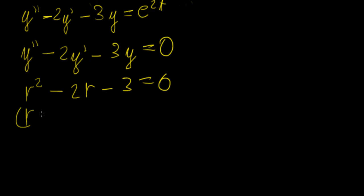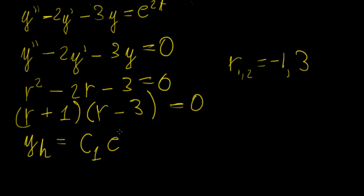We can factorize this, so that's going to be r plus 1 times r minus 3, such that r12 is going to be minus 1 or 3. So our homogeneous solution is going to be c1 e to the minus t plus c2 e to the 3t, because we have two distinct and real roots.